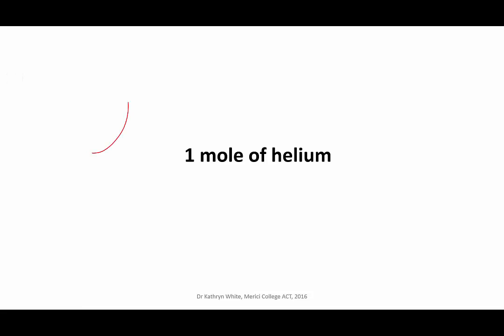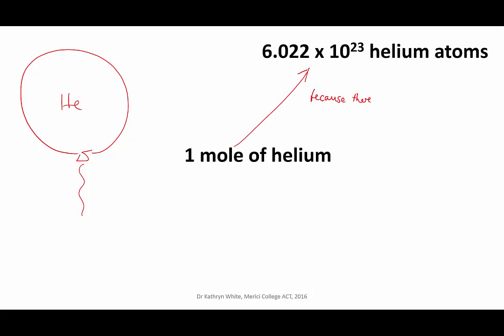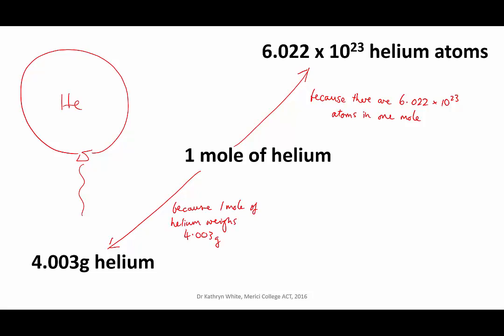If you are given a big balloon containing a mole of helium, there are a couple of things you can immediately work out. Because of Avogadro's constant, there are 6.022 times 10 to the 23 atoms of helium in the balloon. You could look up the periodic table and see that one mole of helium atoms weighs 4.003 grams, so the mass of the gas in the balloon is 4.003 grams.